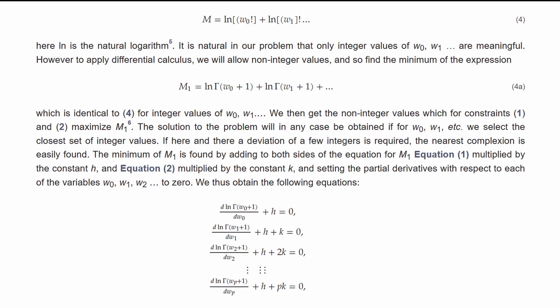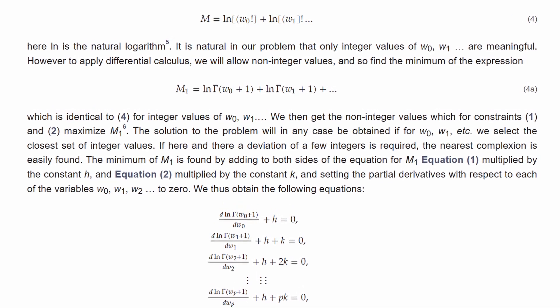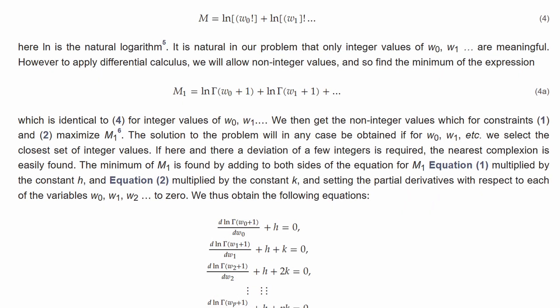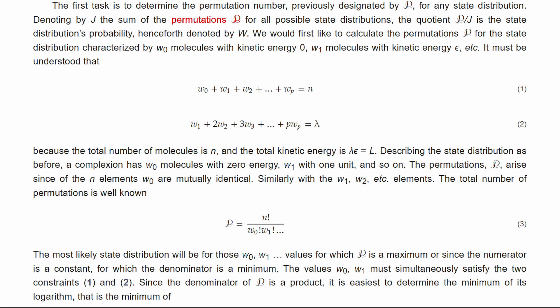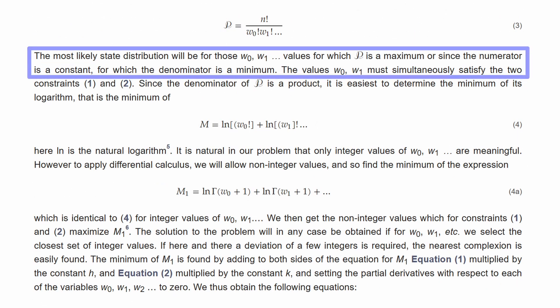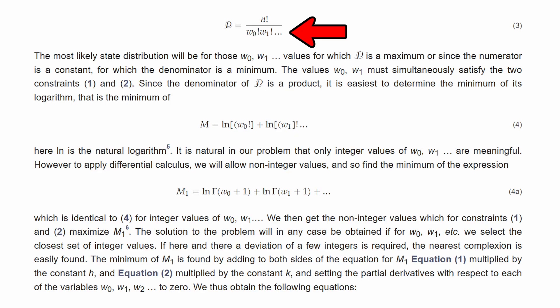In 1877, Boltzmann introduced a logarithm to determine the probability of energy states in the system. P denotes the total number of permutations, or arrangements, possible for energy states in a system. W is a distribution's probability, and n is the number of molecules in the system. Boltzmann then states that the most likely state distribution happens at these probabilities for which P is maximized, meaning the denominator in this equation is minimized given that the numerator is a constant.